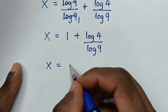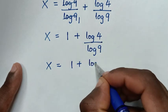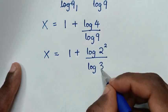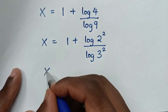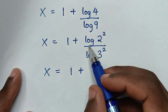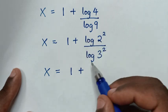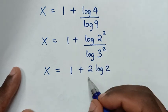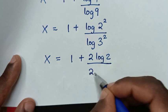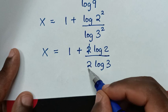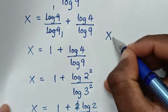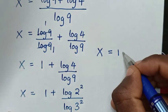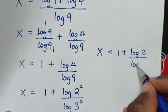Then it will be x is equal to 1 plus log of 4 — where log of 4 is the same as log of 2 squared — over log of 9, which is the same as log of 3 squared. Then the power of 2 will move to the base for both, giving 2 times log of 2 over 2 times log of 3. This 2 will cancel with this 2, so it will be x is equal to 1 plus log of 2 over log of 3.